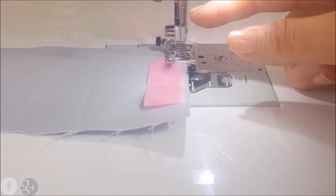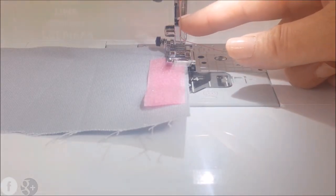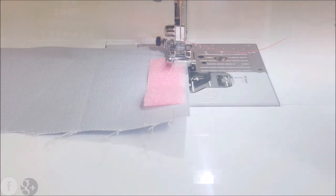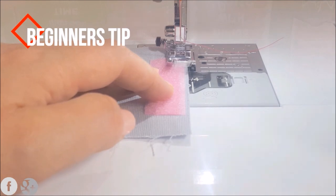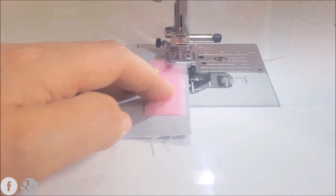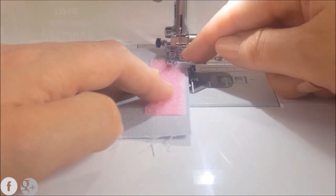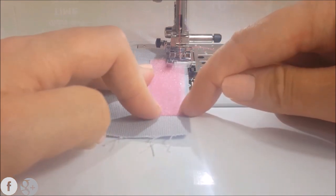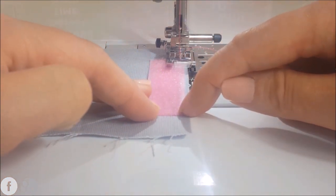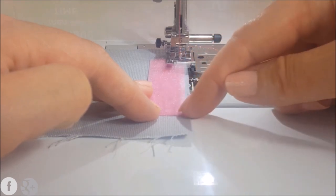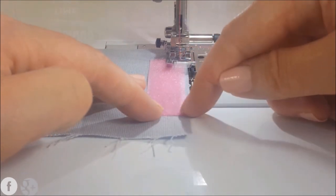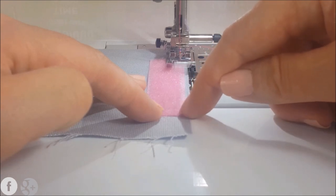I am also using a 90-14 Microtex needle and you are going to want to put your needle in the down position. So every time it stops at the end of the velcro here, it's going to stop in the downward position. So when you pivot, it's down and it makes it easier to work with.